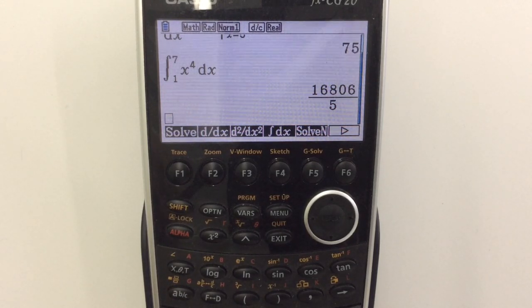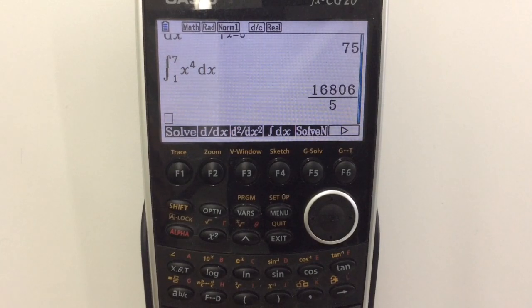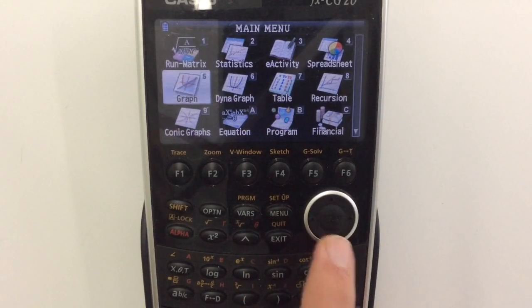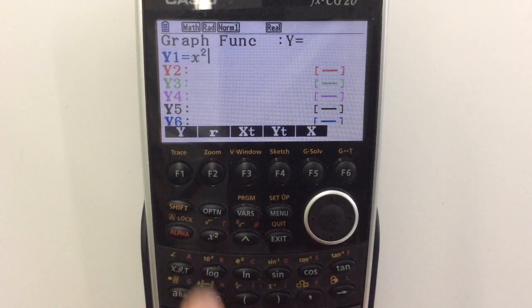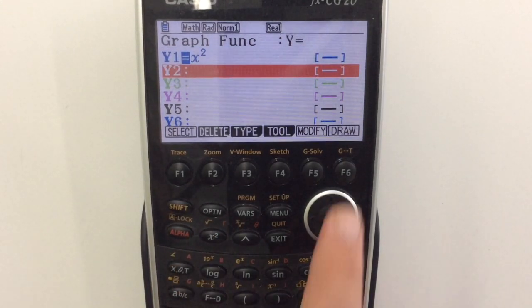There is however a second way of doing it. This is a slightly nicer way. If we go into our graph mode and draw something, let's keep it nice and simple. Let's just do x squared for the moment. We draw that.